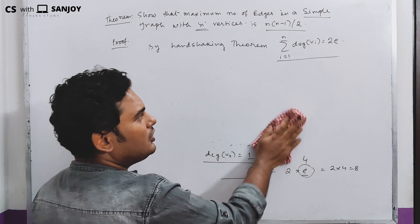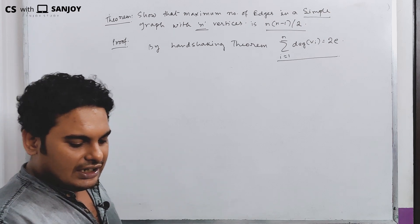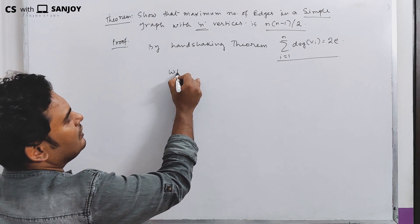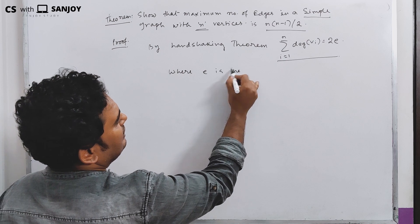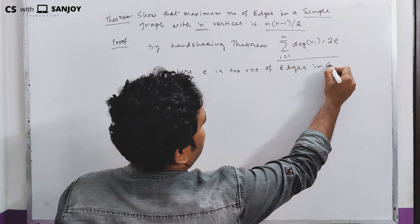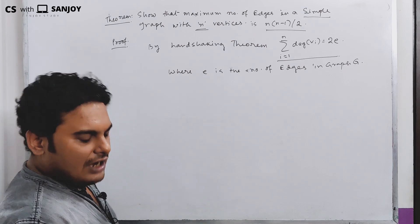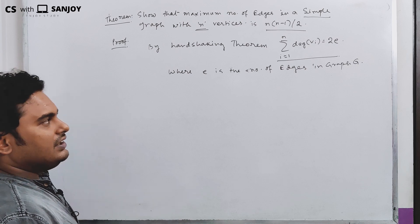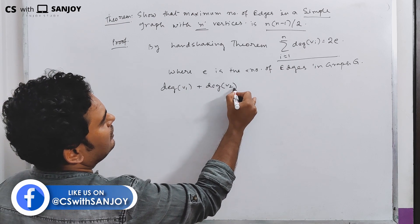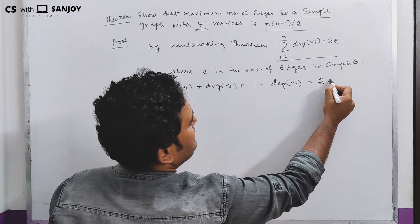I am going to use the handshaking theorem to prove this. The total degree equals the sum: degree of v1 plus degree of v2 plus dot dot dot plus degree of vn, where n is the number of vertices, and this equals twice of e, where e is the number of edges in graph g.